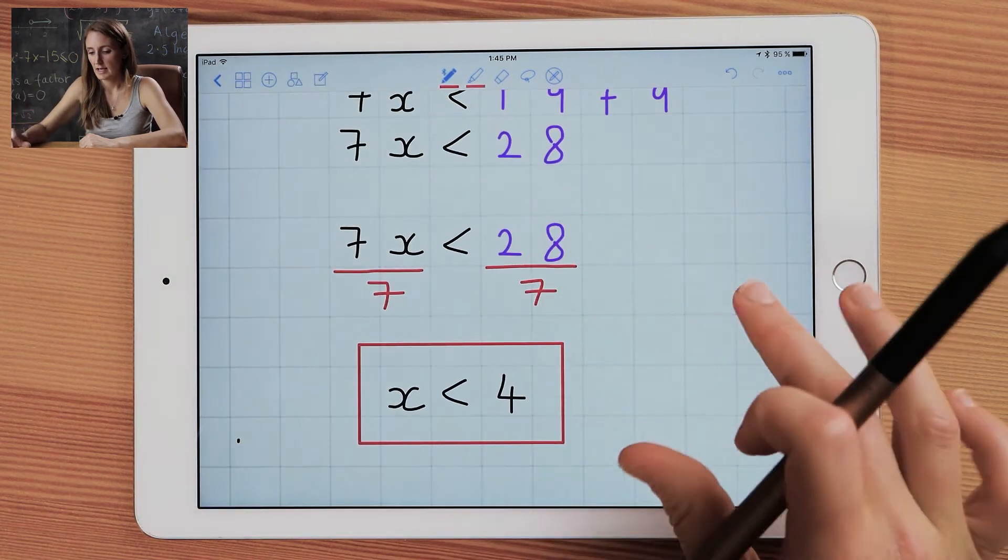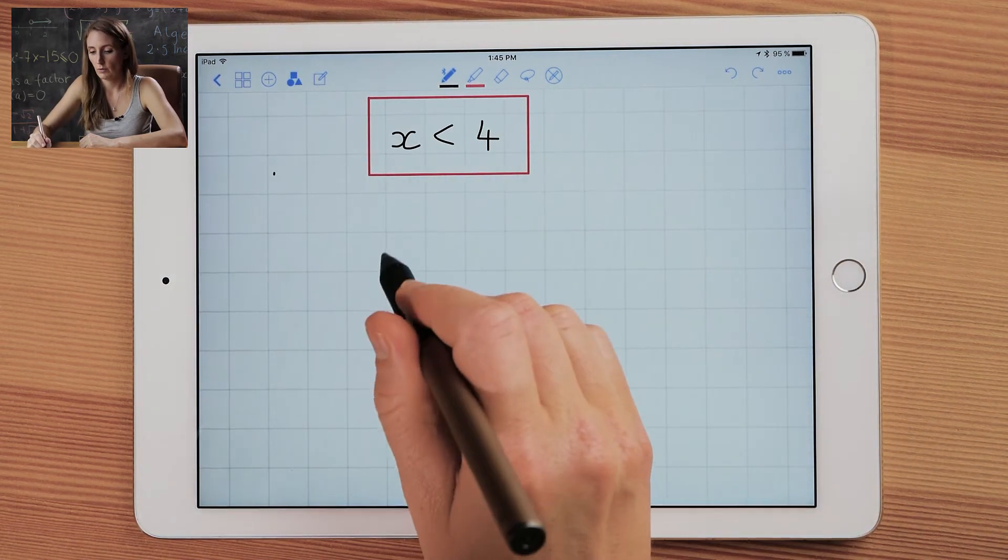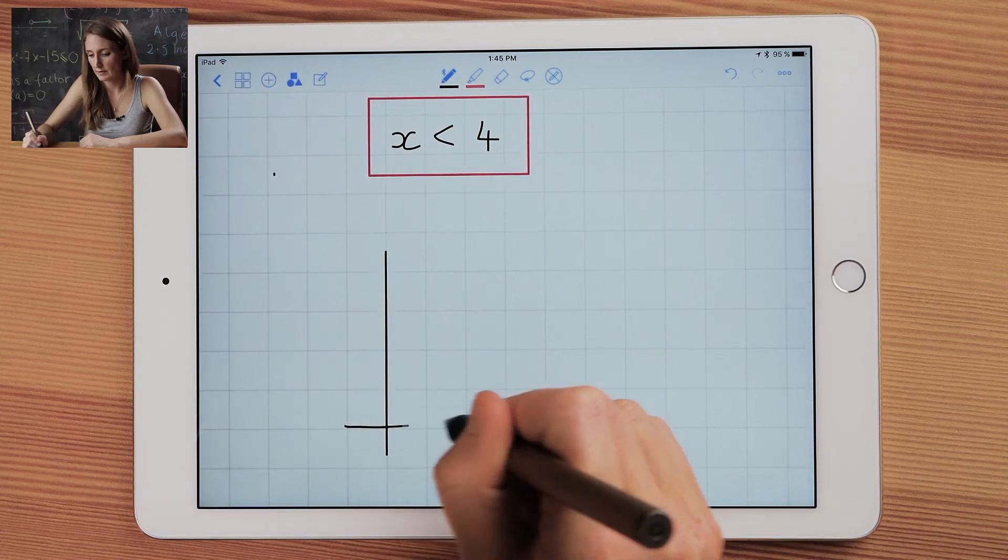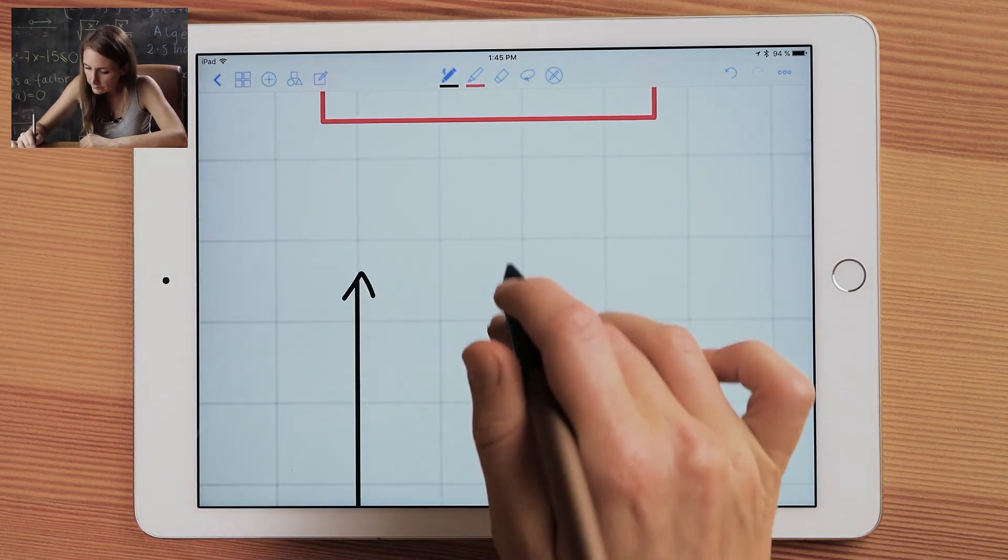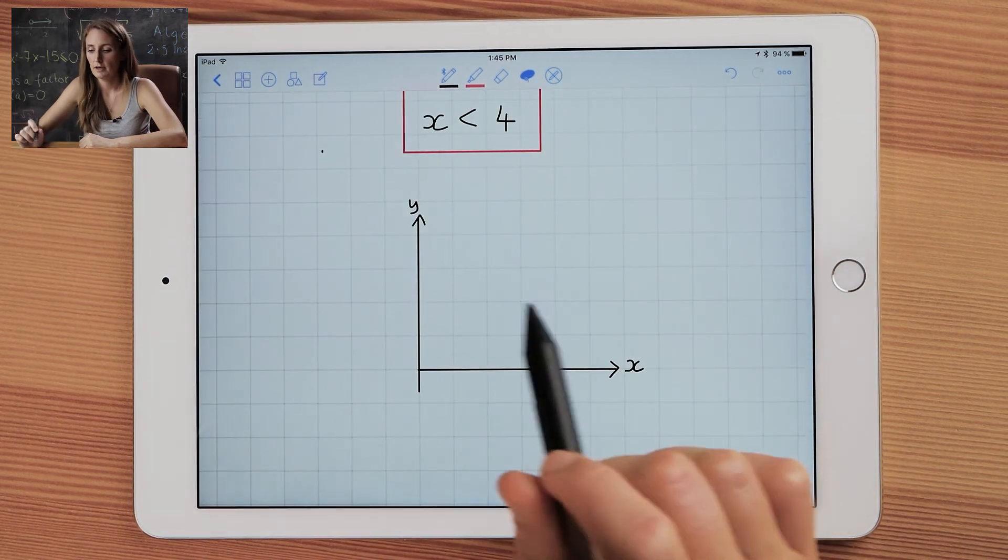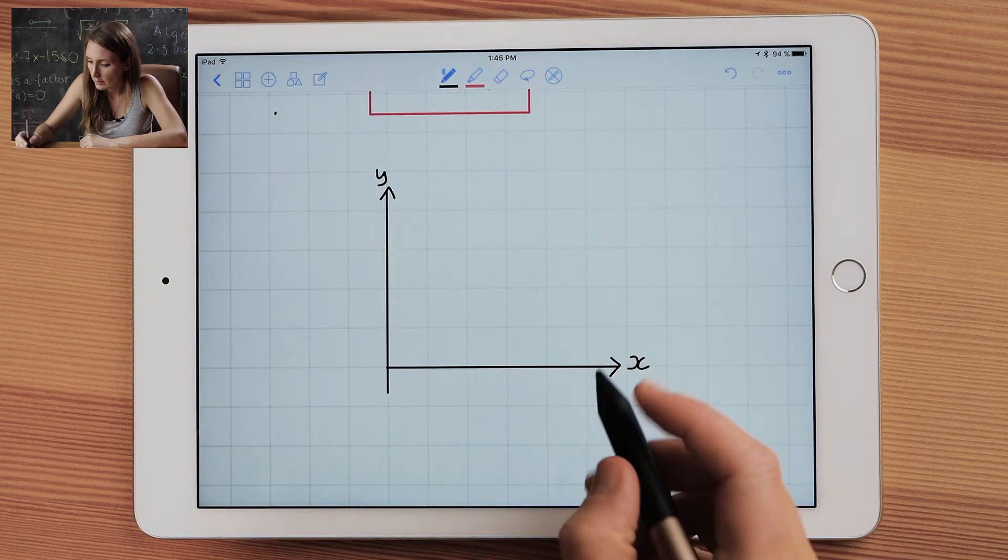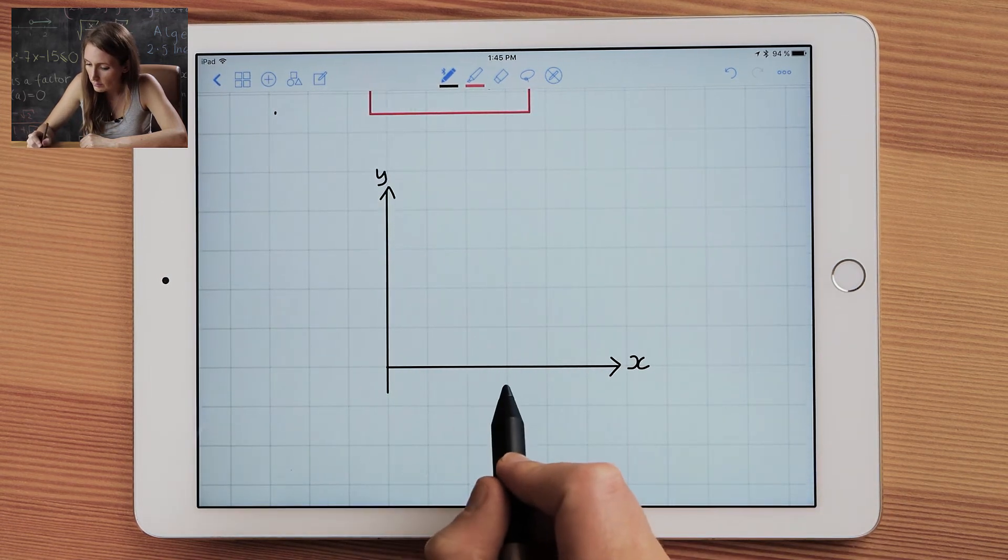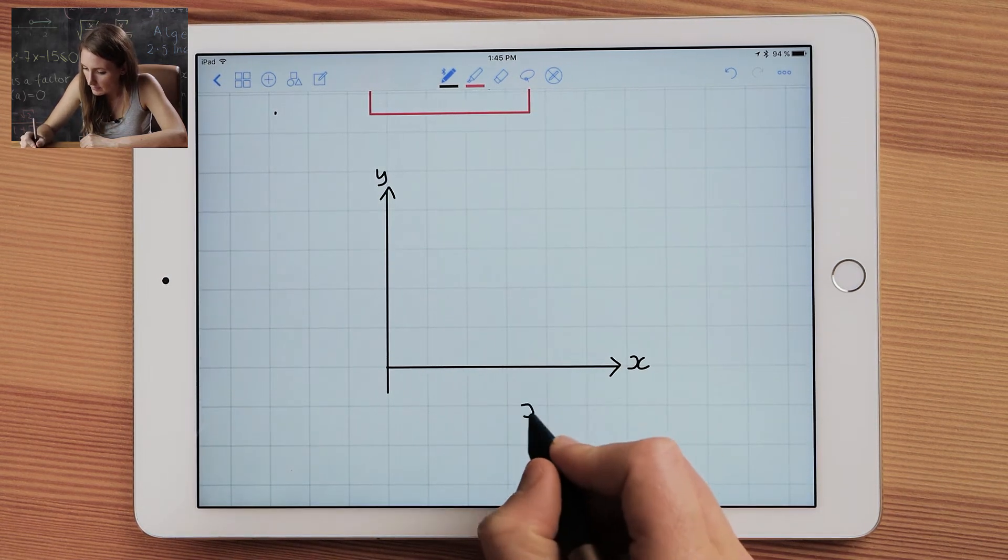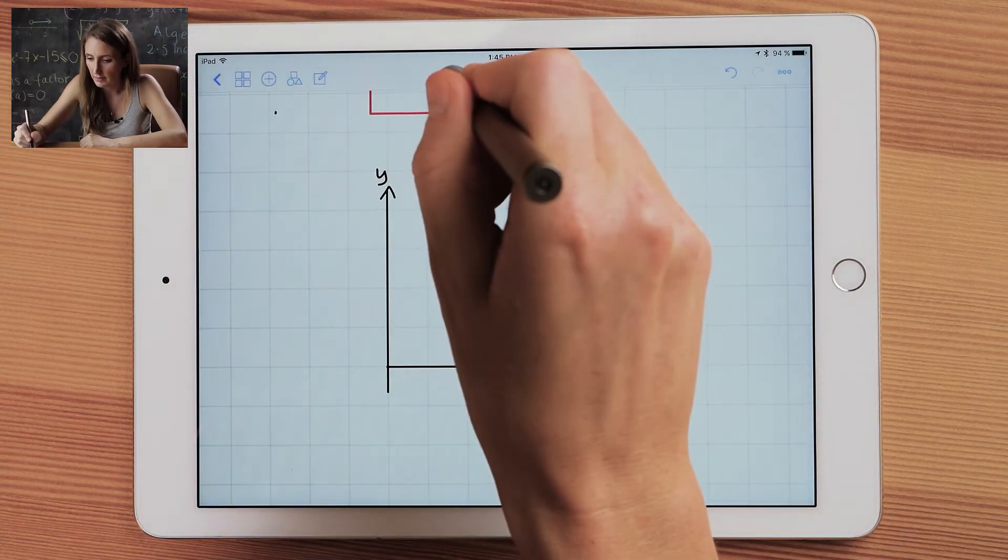We're going to just take a second and graph this. Start by drawing a coordinate axis system. This is going to be a little sketch. Now I'm going to draw the line x is equal to 4. So 1, 2, 3, 4. So here it's going to go x is equal to 4, and I'm going to draw a line there.